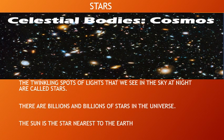Stars. The twinkling spots of light that we see in the sky at night are called stars. There are billions and billions of stars in the universe. They are huge balls of very hot gaseous matter. They are self-luminous celestial bodies that emit heat and light. The sun is the star nearest to the earth.